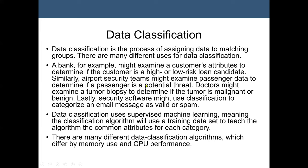Similarly, airport security teams might examine passenger data to determine if the passenger is a potential threat — this would be a classification task. For example, an image of a known terrorist may be in the immigration database system. When passengers arrive, they scan their passport or have their picture taken. This image goes to the classification model to analyze whether it matches an image already in the database.